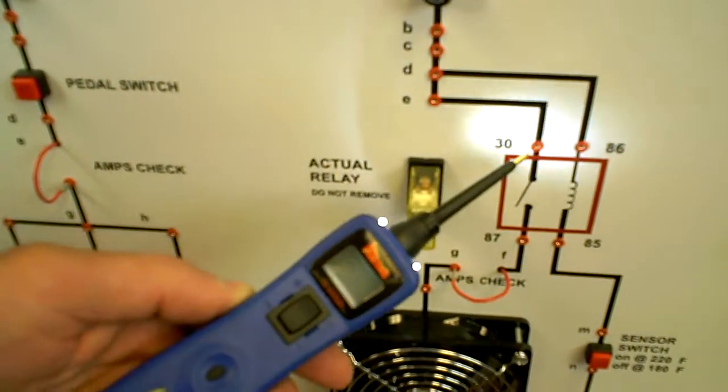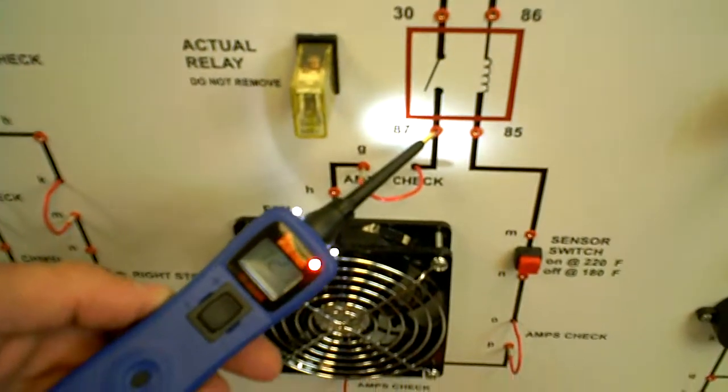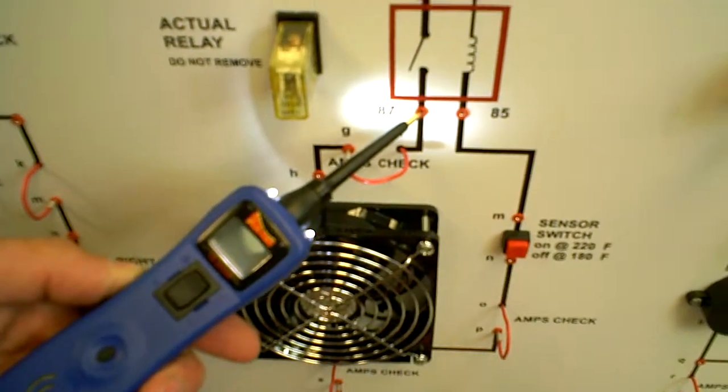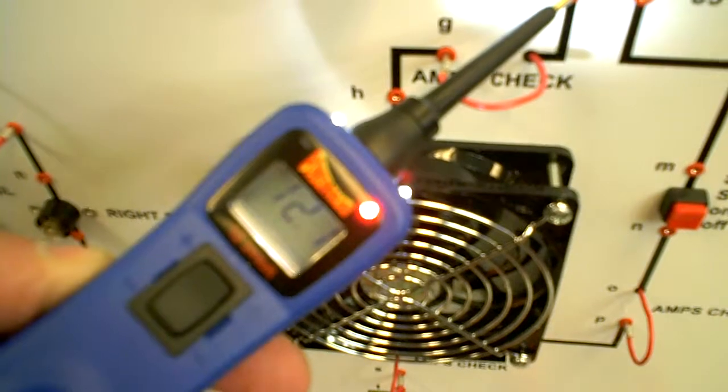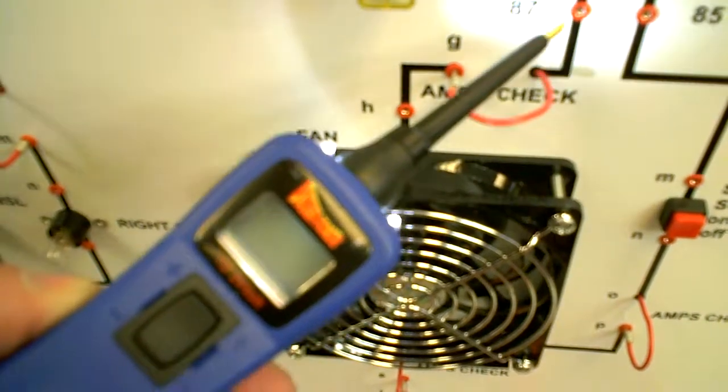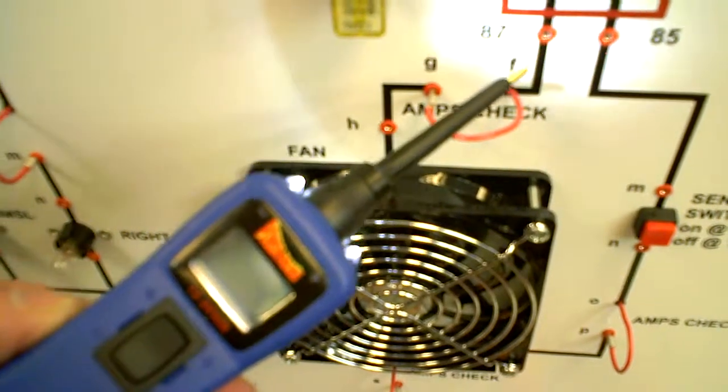So when I come down here to the relay assembly, it's showing 12.1 before the relay and 12.1 afterwards. If I turn off the circuit, it goes dead. If I turn it on, I'm showing my 12.1 volts. So I know I got the voltage running down through the relay assembly, so my relay coil and my relay contact points are working.